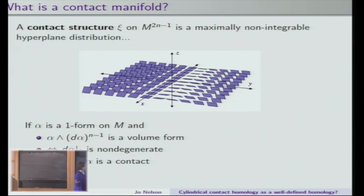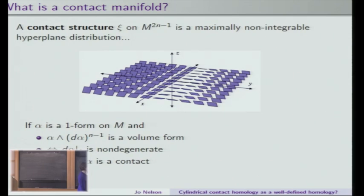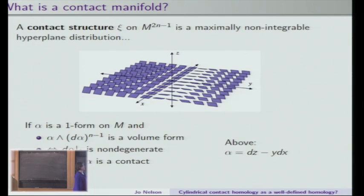And if I have some hyperplane distribution, how do I know it's maximally non-integrable? This is where a contact form comes into play. You can define any hyperplane distribution as the kernel of a one-form. It turns out that this one-form is actually a contact form — meaning it defines a contact structure — if alpha wedge d-alpha to the n minus one is a volume form, or equivalently, d-alpha restricted to the contact distribution c is non-degenerate. Above, we have alpha equals dz minus y dx. A really easy exercise is to compute alpha wedge d-alpha, and you get dx dy dz, which is everyone's favorite contact form in R3.